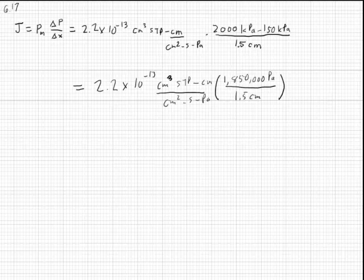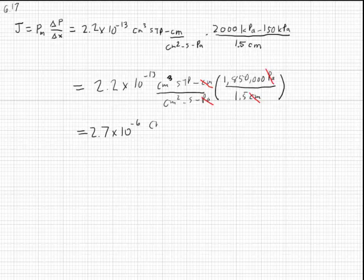We can cancel out the centimeter and pascal units, and doing the math, we get 2.7 times 10 to the negative 6th centimeters cubed STP over centimeters squared seconds. That is our final answer.